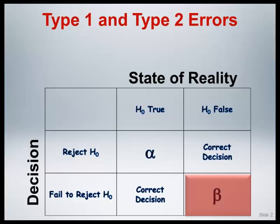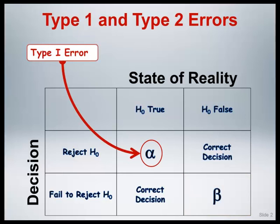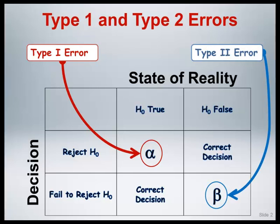Rejecting the null when the null is true is called a type 1 error and is denoted by the Greek symbol alpha. This is the same alpha used to represent the significance level of the test, and so when one selects the significance level, they are choosing the type 1 or alpha error rate. Failing to reject the null when the null is false is called a type 2 error and is denoted by the Greek symbol beta. Beta is related to statistical power and will be discussed further in section 5 of this module.